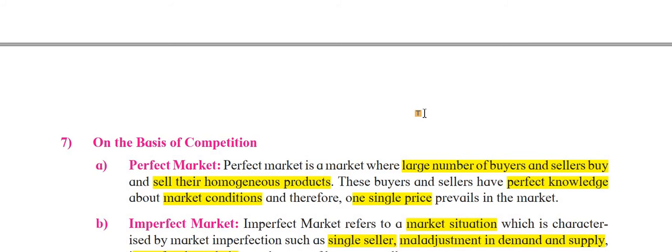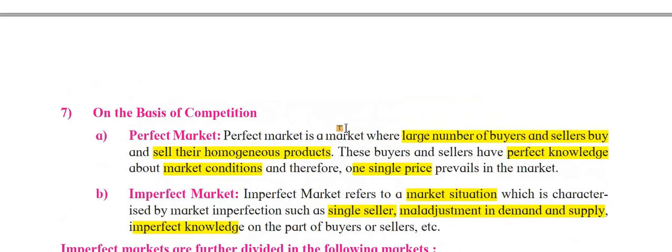The last classification is on the basis of competition. The first one is perfect market. Perfect market is a market where a large number of buyers and sellers buy and sell homogeneous products. The number of buyers and sellers is large, buyers have many options to buy, and both buyers and sellers have perfect knowledge about the market conditions. That is why this market is called a perfect market.